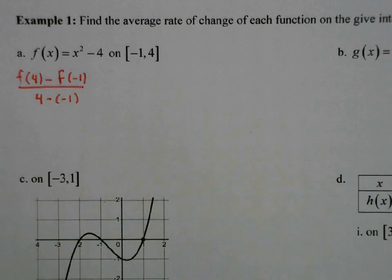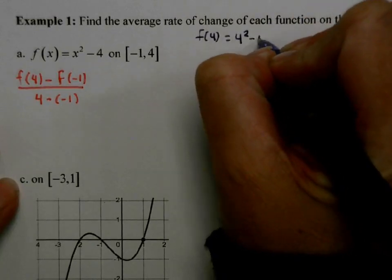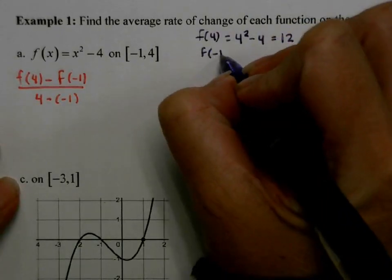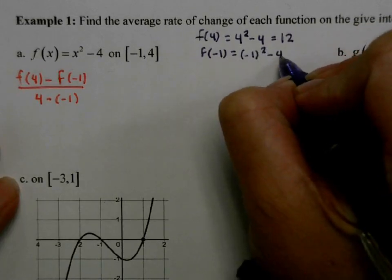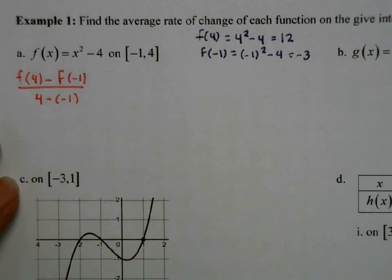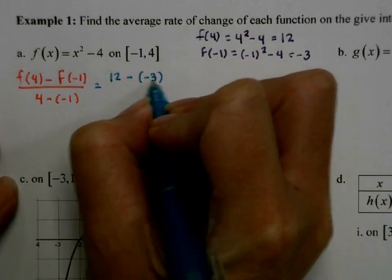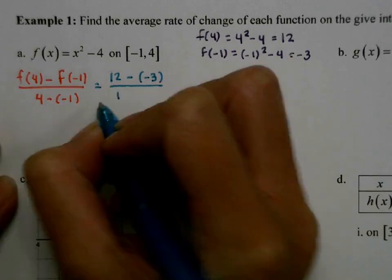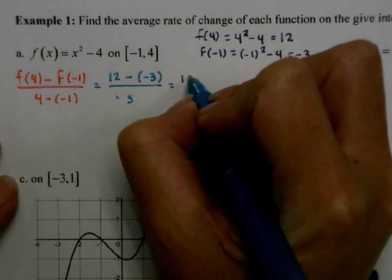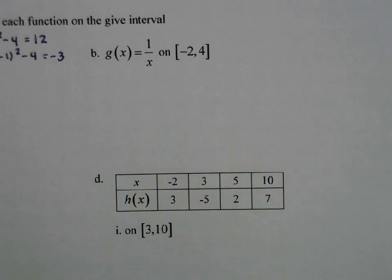Well, f of 4 and f of negative 1. I'm going to go ahead and do this as a side calculation. f of 4 is going to be 4 squared minus 4, which is 16 minus 4, which is 12. And then f of negative 1 is negative 1 squared minus 4. A negative squared is always positive, so we get 1 minus 4, which is negative 3. Then I'm going to plug those into my formula. So f of 4 was 12 minus negative 3 over 4 minus negative 1, which equals 15 over 5, and we get 3.